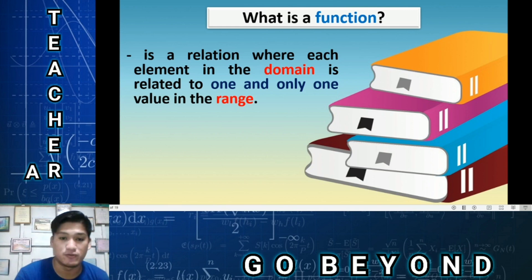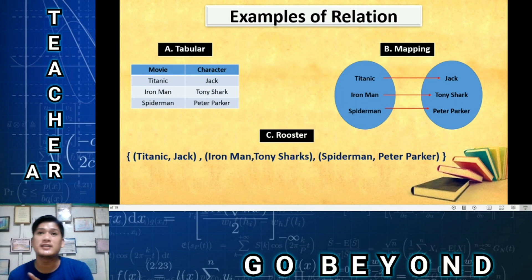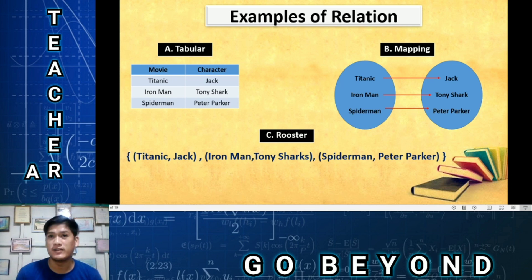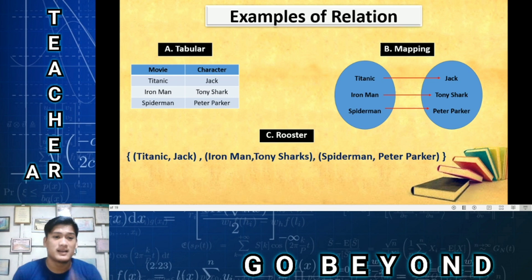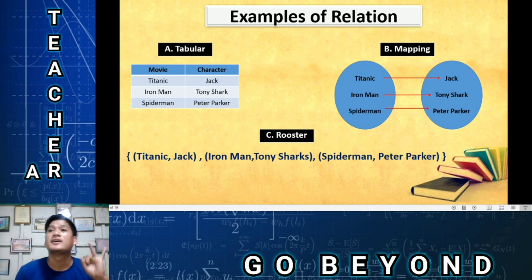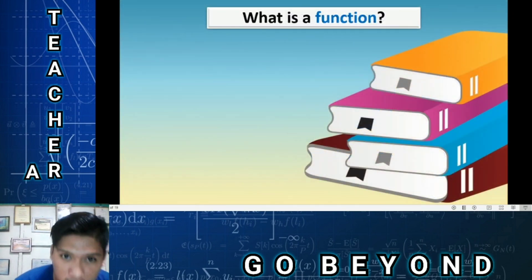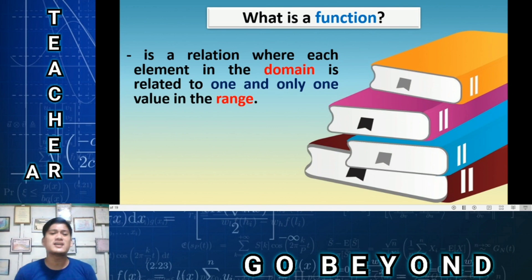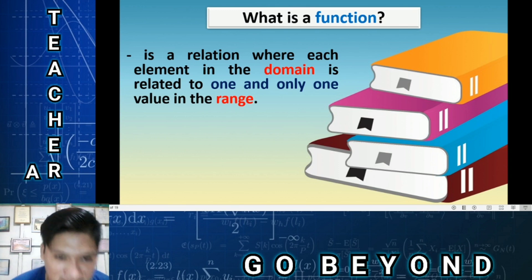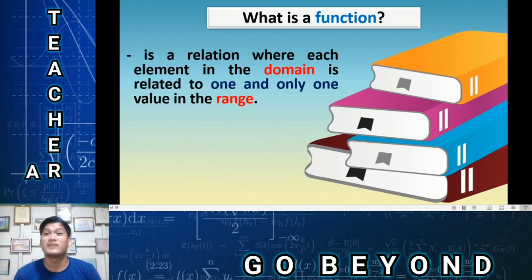A function is a relation where each element in the domain is related to one and only one value in the range. Recall: the domain contains the first elements — in our example, Titanic, Iron Man, and Spider-Man. The range contains the second elements — Jack, Tony Stark, and Peter Parker.